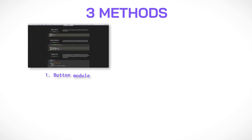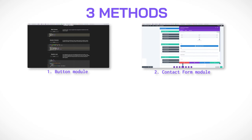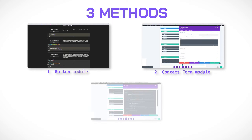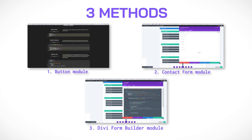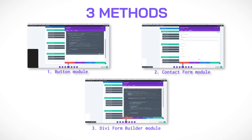I'm going to show you three different ways to add it. We're going to be adding it to a button module, we're going to be adding it to a Divi contact form module, and then lastly we're going to be adding it to a Divi Form Builder form module. Let's go and take a look.